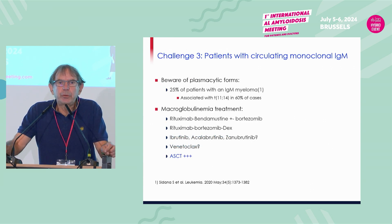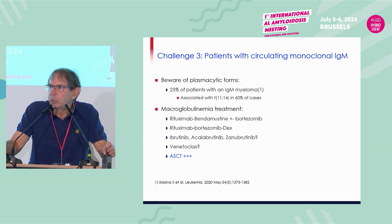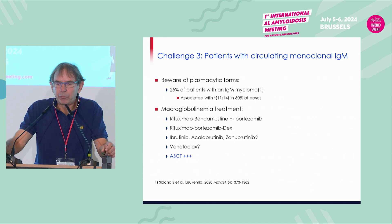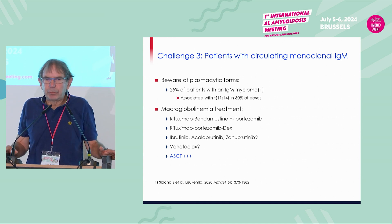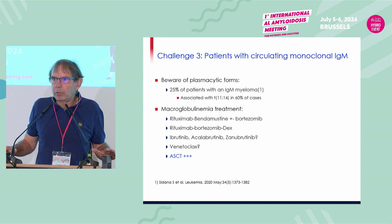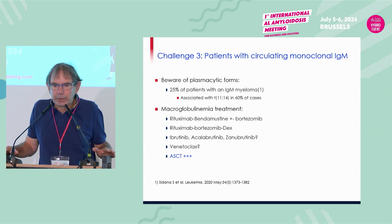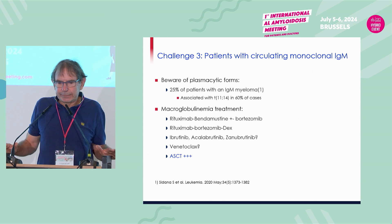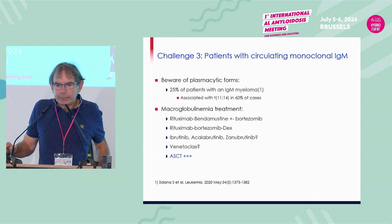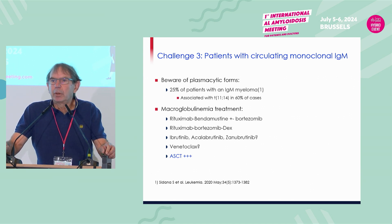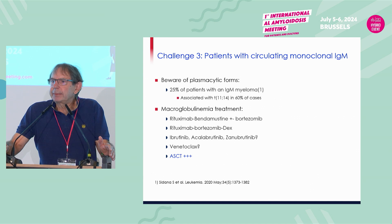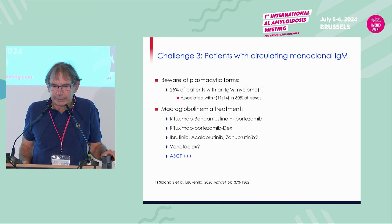The third challenge is what to do for patients with circulating monoclonal IgM. You must be aware of the plasmatic form — one fourth of these patients in fact have an IgM myeloma, often with t(11;14), requiring myeloma treatment. Otherwise, you use the best macroglobulinemia treatments: rituximab, bendamustine, plus or minus bortezomib-dex, BTK inhibitors, or maybe Venetoclax. For IgM, autologous stem cell transplantation is actually a good option.